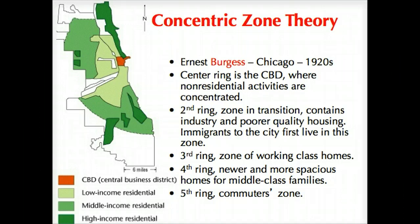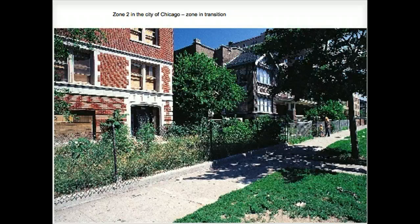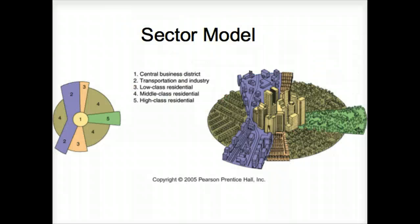Here's a quick image of zone two, the zone of transition, where you can see it's a little rundown — some two- or multi-family homes, tenement housing, and boarded windows.